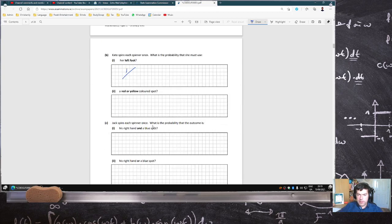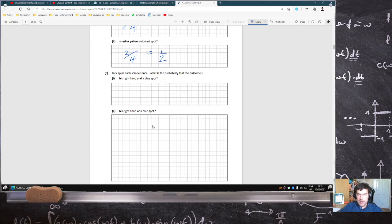Probability of left foot is 1 over 4. Red or yellow is 2 over 4, which is 1 over 2. His right hand, 1 over 4, and a blue spot, 1 over 4. That's 1 over 16.